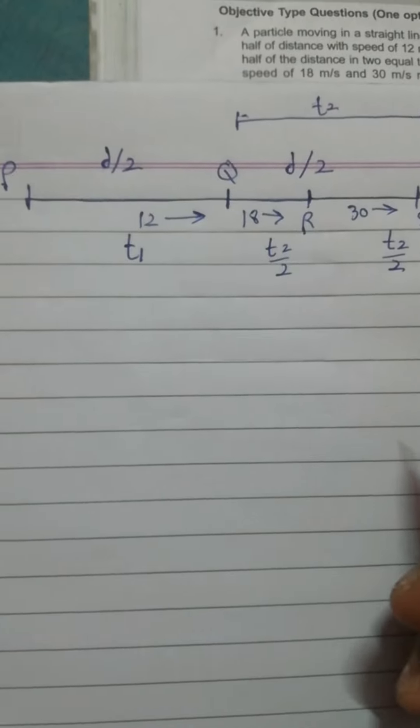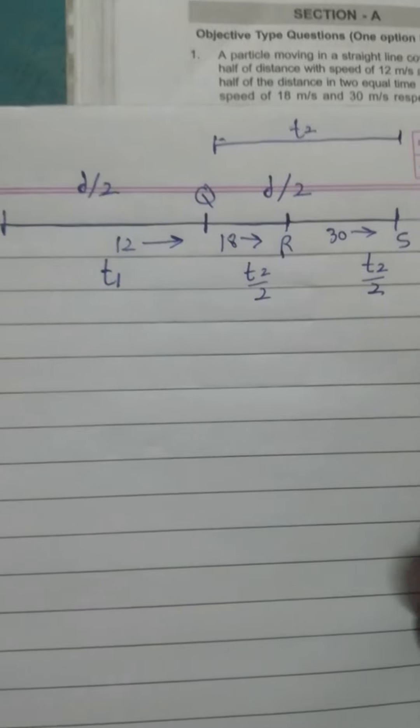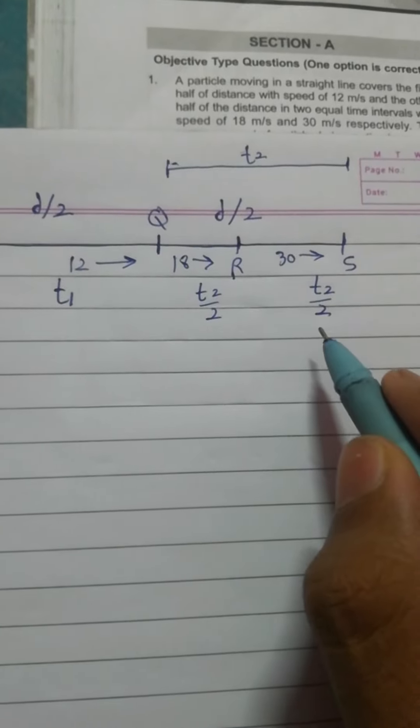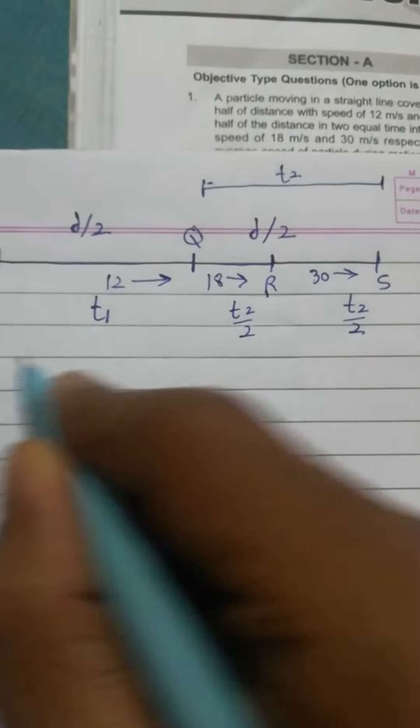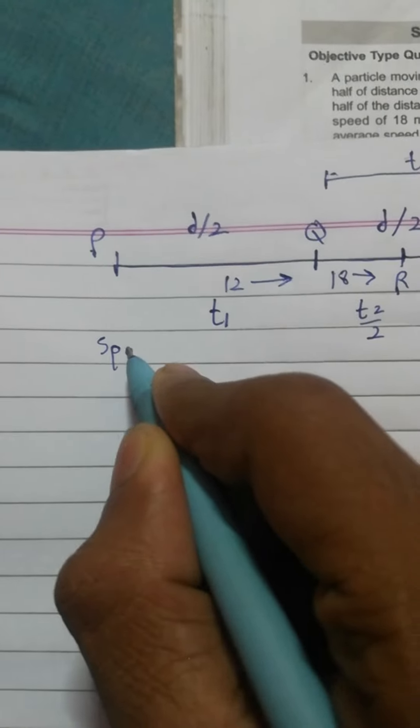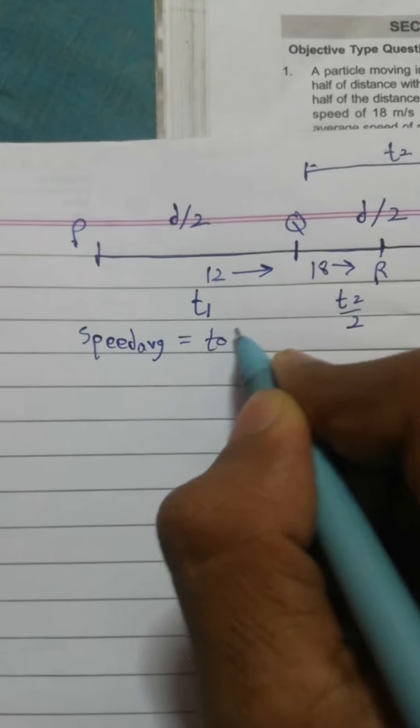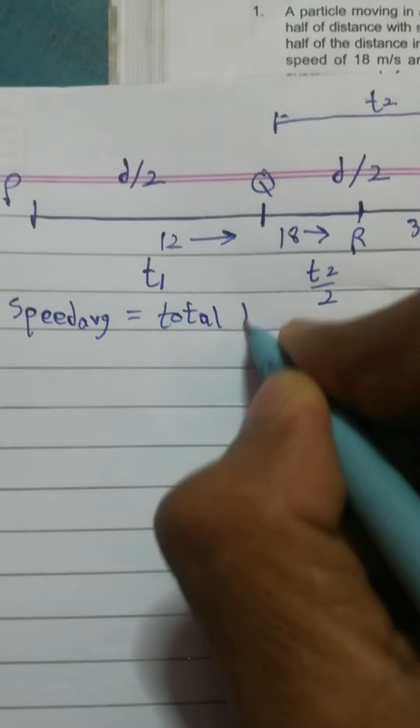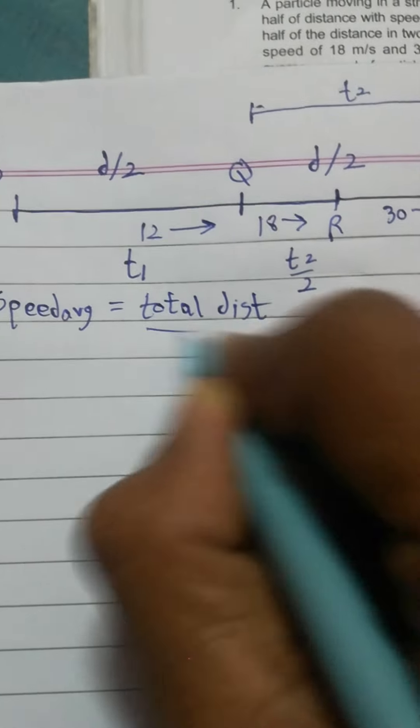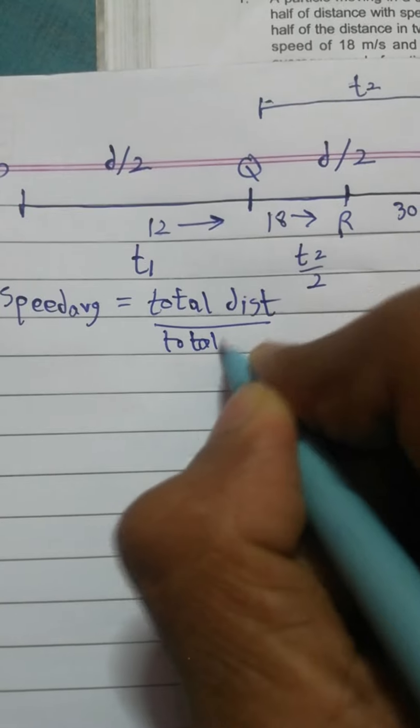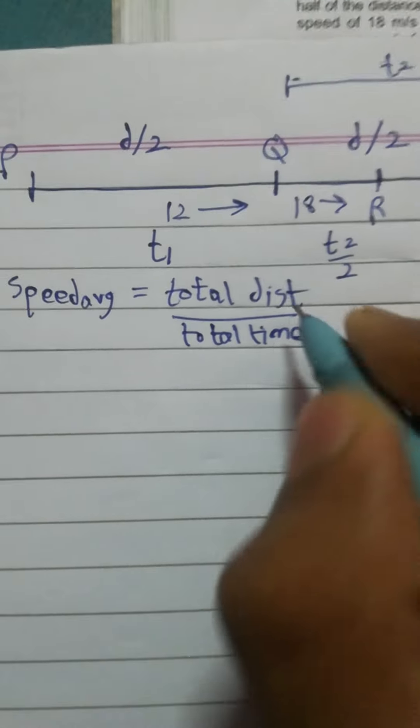And after that we have to find the average speed. So we know that speed average is total distance upon total time.